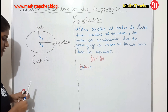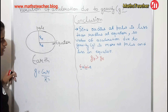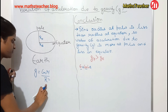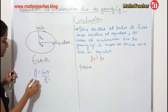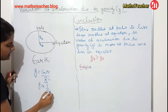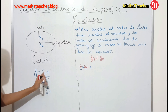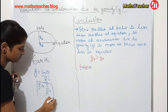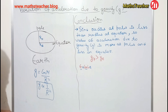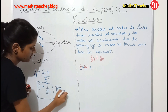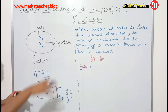Now we will see what is the difference between the value of g at poles and equator. In the previous video we derived the formula: g equals GM upon r square. Here g and r are the variables — r is the radius of the planet. We will establish a relation between g and r: g is inversely proportional to r square, since G and mass of the planet are constant.